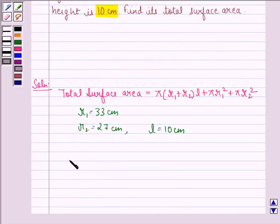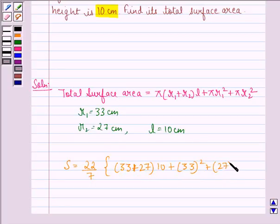We have S is equal to, that is the total surface area, 22/7 into (33 + 27) multiplied by 10 plus 33² plus 27².